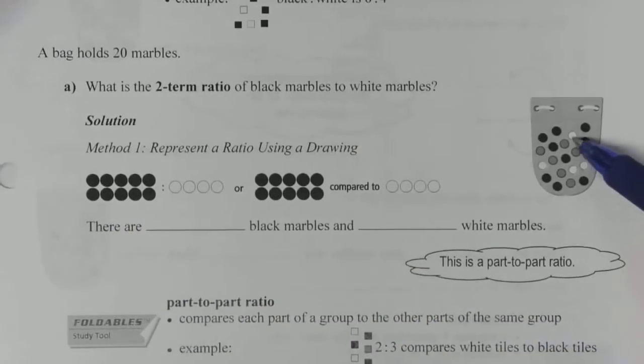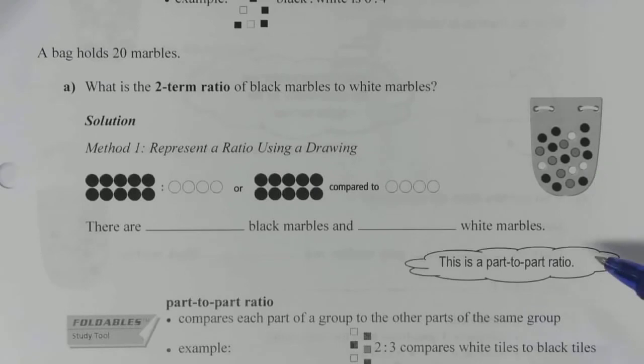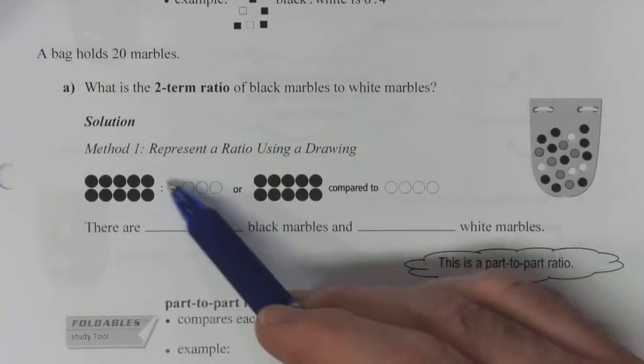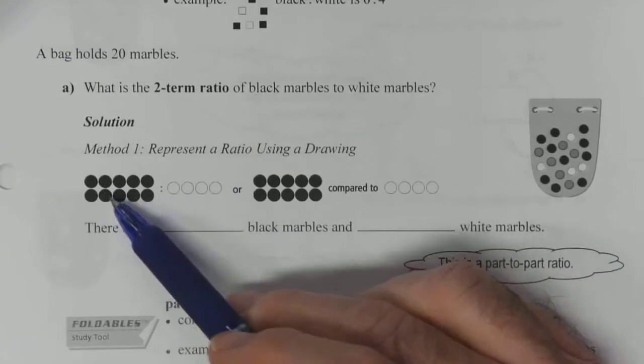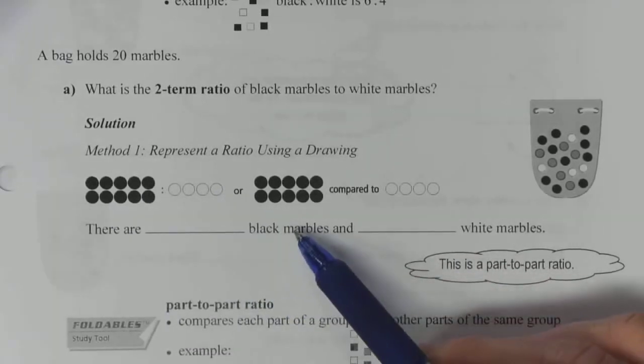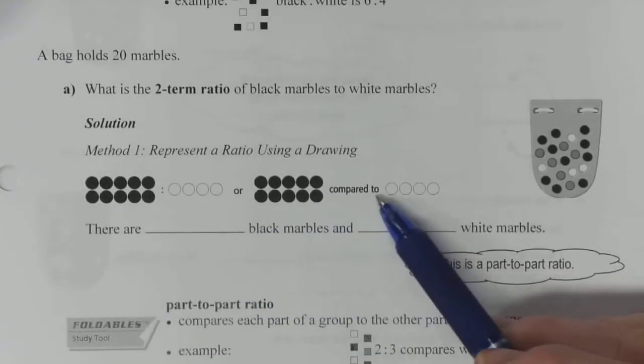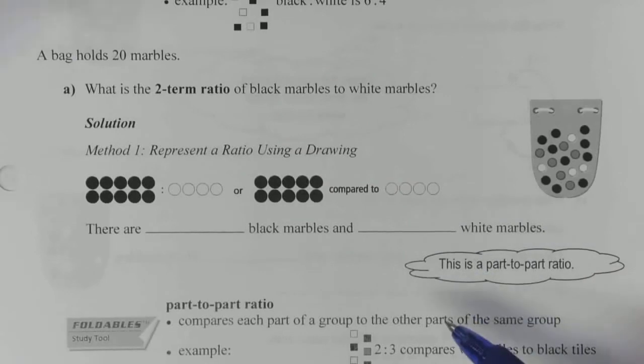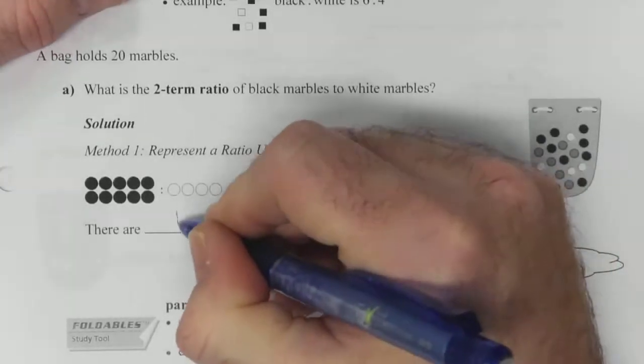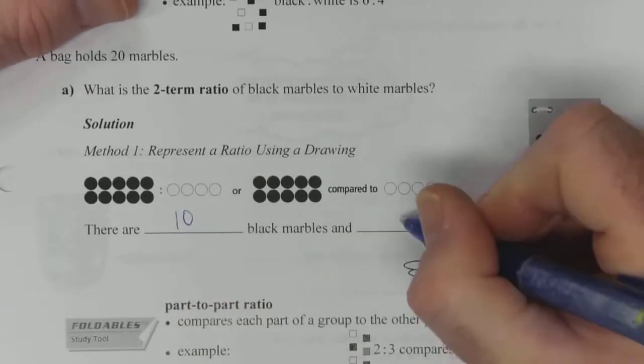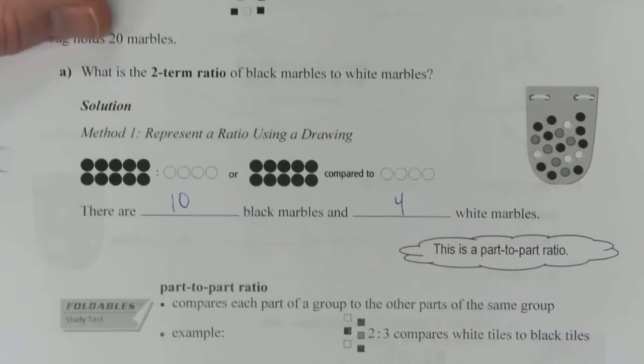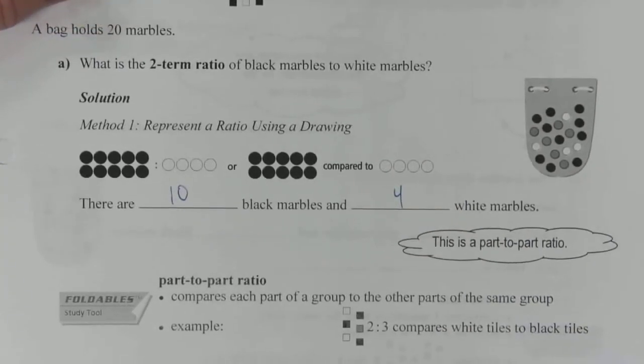And then we can count the white ones. One, two, three, four. So we've got four white ones, and we've got a colon in between them. So it's ten black to four white. Or you can say it's ten black compared to four white. And as we said, there are ten black marbles and four white marbles.